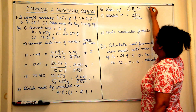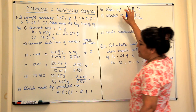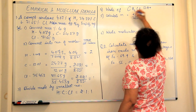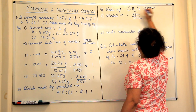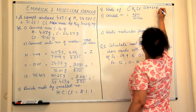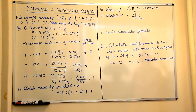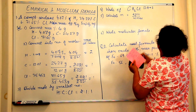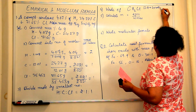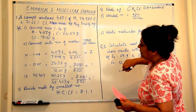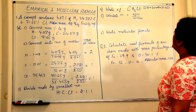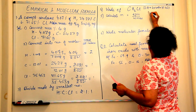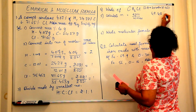Now we must calculate the empirical formula mass. Carbon is 12.01, plus 2 hydrogens — 2 × 1.008 — plus chlorine is 35.453. When you solve this, the empirical formula mass is 49.48 grams.